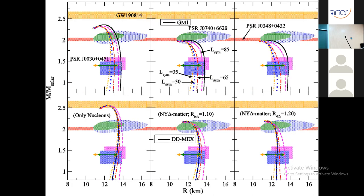However, including heavier baryons softens the matter so much that with non-linear parameterizations (upper panels), matter only marginally satisfies the lower bound of maximum mass. Mass-radius measurements and other astrophysical observations are satisfied across the entire range of l-sim. Hence, matter with exotic degrees of freedom under the DD scheme is more compatible with recent nuclear physics and astrophysical data. Another viable option is nucleonic matter with the NL scheme.